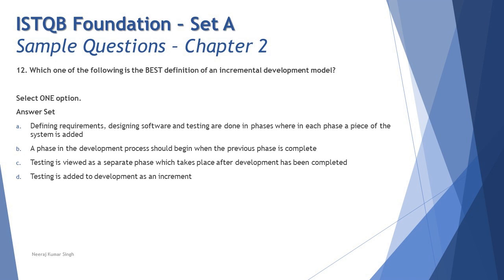Question 12: which of the following is the best definition of an incremental development model? These are crucial questions. Chapter 2, section 2.1 talks about development models — not how they work in detail, but the flow of interacting with different phases and how testing activities are organized. You must know how different models vary from each other.